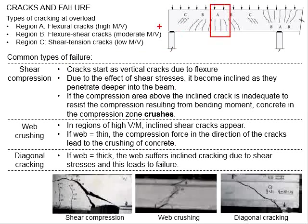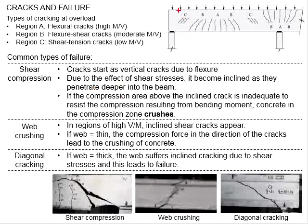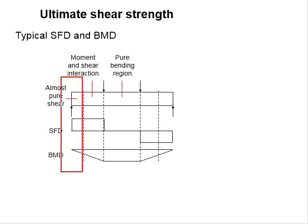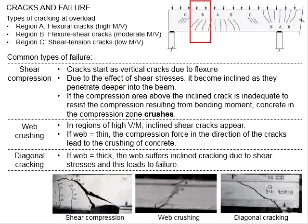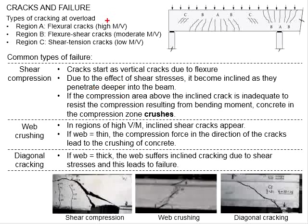The mid-span region represents a condition of high magnitude of moment over shear load — the pure bending region. The regions at the support represent a situation of minimum moment but high shear force — almost pure shear. There is also an intermediate region with moderate moment and shear acting together. Due to different loads, the crack response is different. At the mid-span regions, flexural cracks develop.